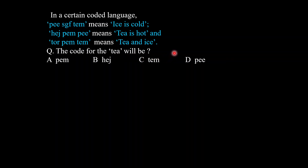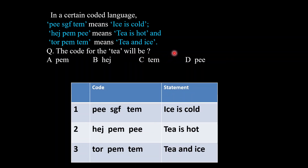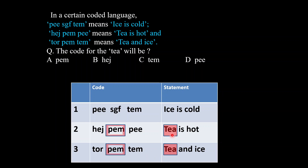The approach to solve these types of questions is to first draw a table. The word T is present in statement number 2 and statement number 3, so its code will be present only in those two statements. Noticing the codes, PEM is present in both statement 2 and 3, so the code for T is PEM. We got our answer as option A, which is PEM. See how easy it is!